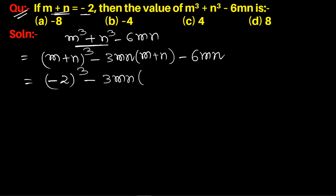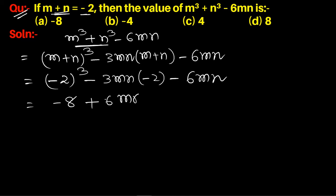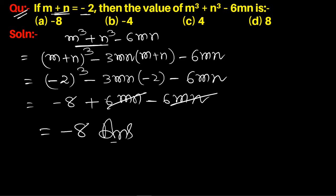Evaluating: -8 + 6mn - 6mn. The 6mn terms cancel each other out, giving us -8. So the required answer is -8, and option (a) is the correct answer.